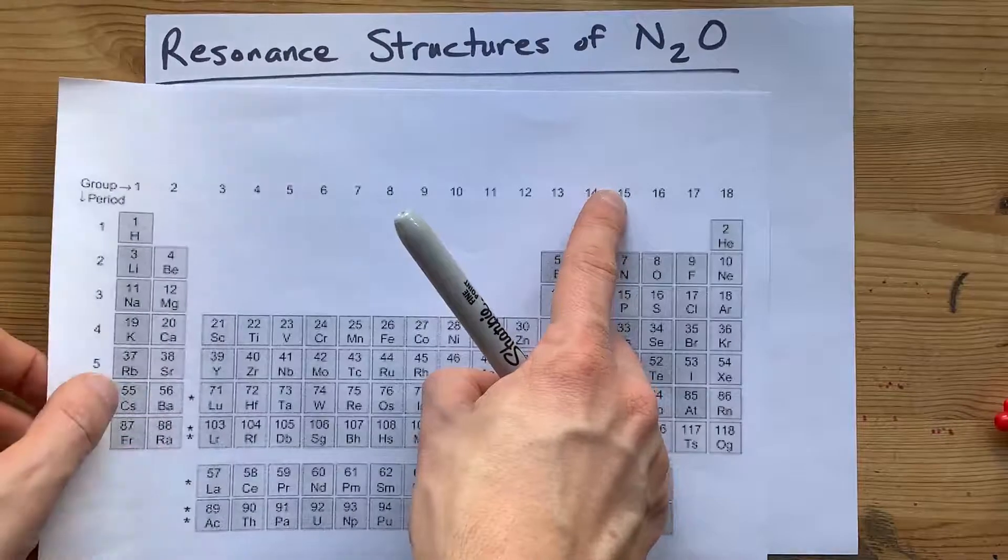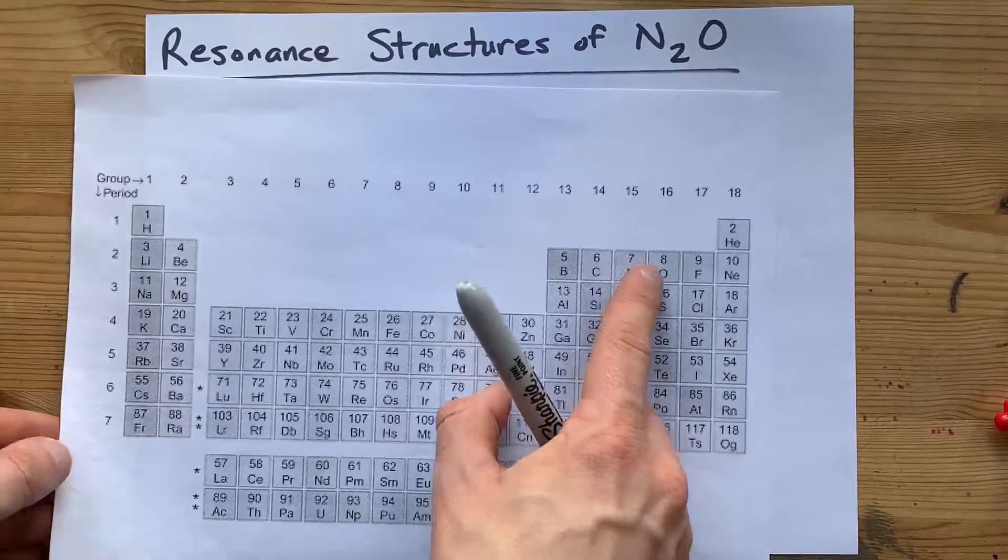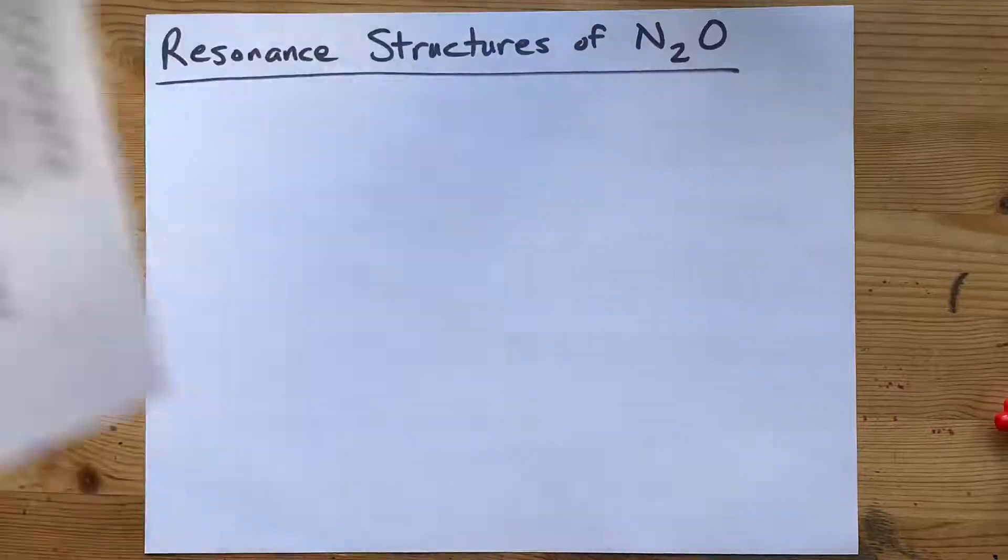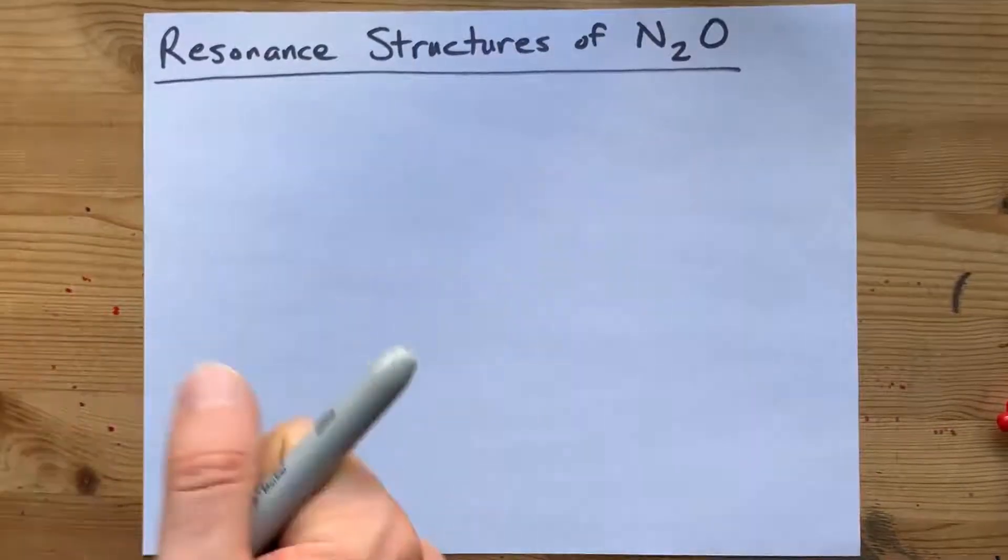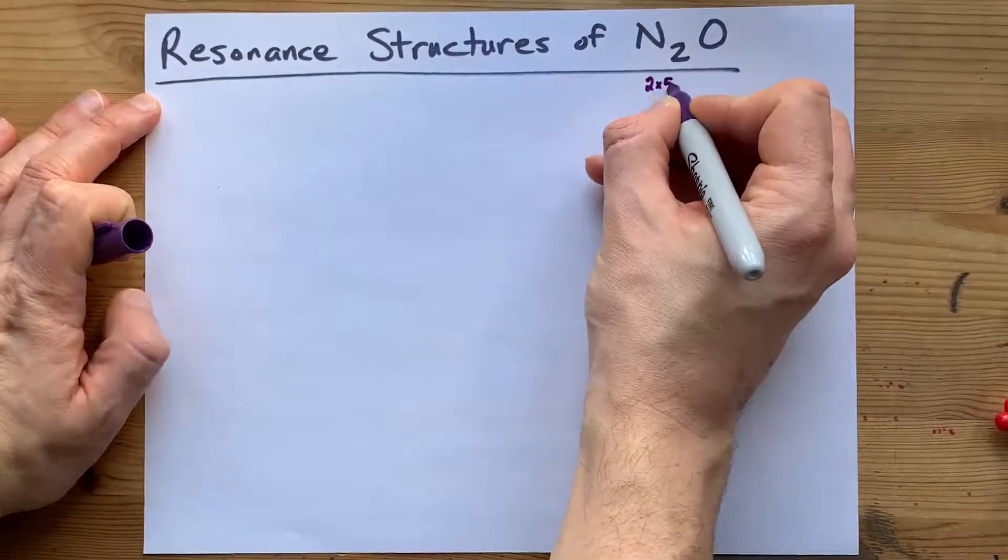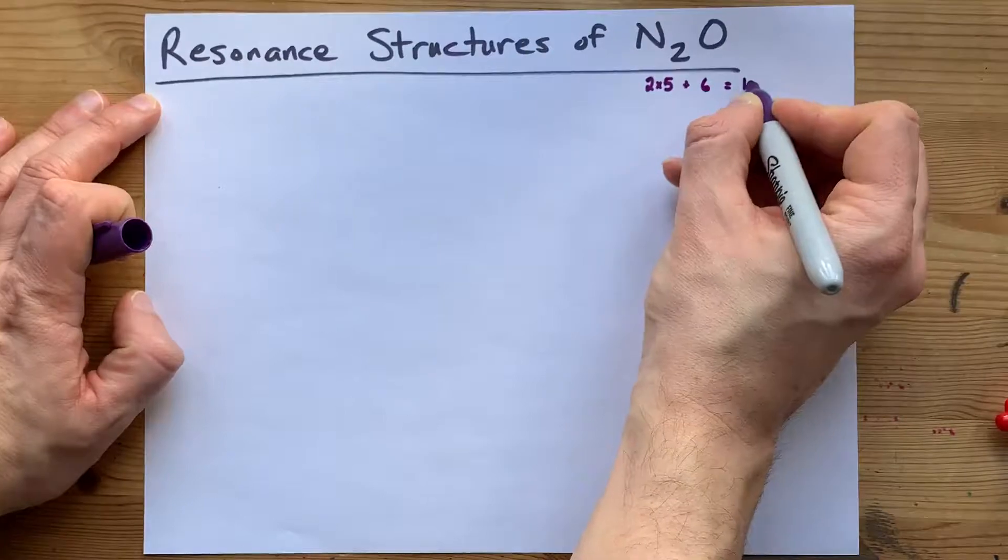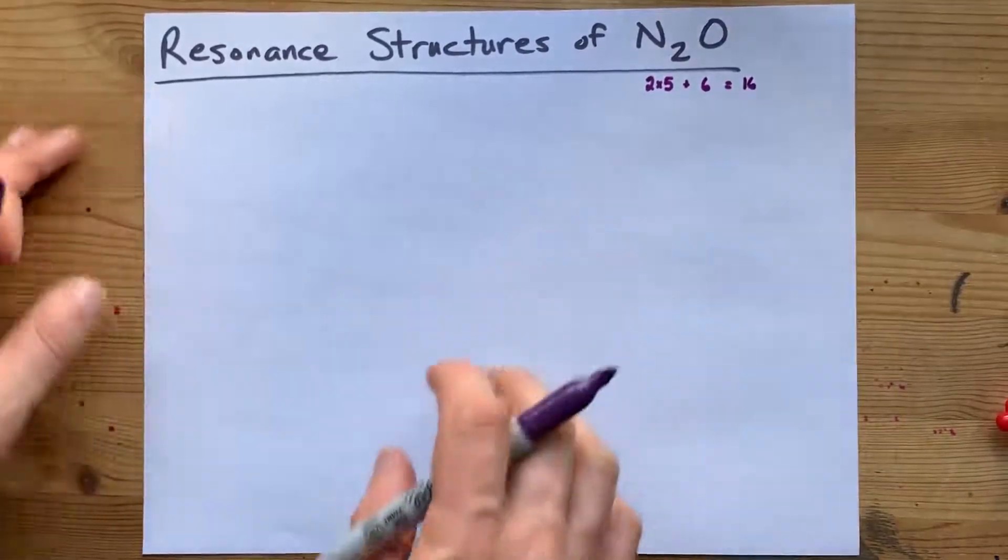Nitrogen is in group 15, so each of them brings 5 valence electrons with it. Oxygen is in group 16, so it brings 6 electrons with it. That's 2 atoms of nitrogen, bringing 5 each, and an oxygen bringing 6. That's 16 valence electrons total.